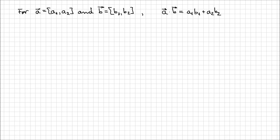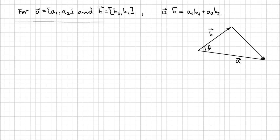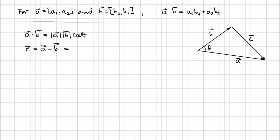Let's actually prove that this is right. I have vectors A and B and the angle between them, theta. I'm also going to use vector C to find a relation between these two vectors. For geometric vectors, by definition, the dot product of A and B is the magnitude of A times the magnitude of B times the cosine of the angle between them. We also know that vector C is nothing else than A minus B — the difference of those two vectors, as we know from the triangle method of addition and subtraction.